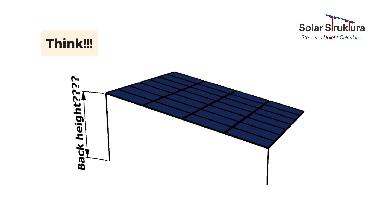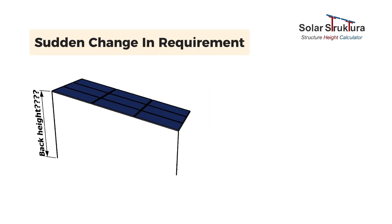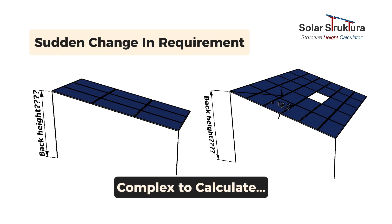People can give you a rough idea. But if the requirement changes — 3 panels, 5 panels, 6 panels, or 18-degree angle, 20-degree angle, or any other angle — it becomes difficult to determine the height.